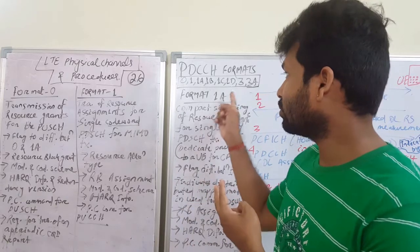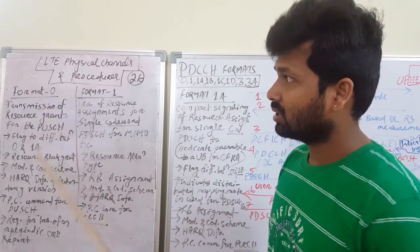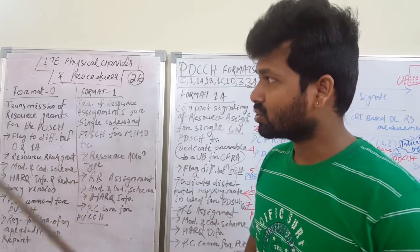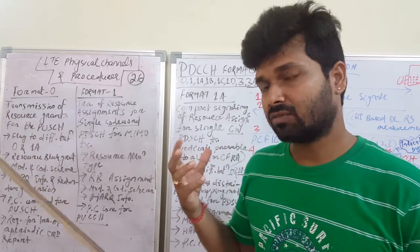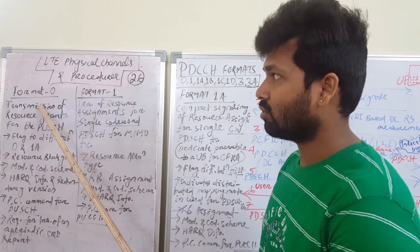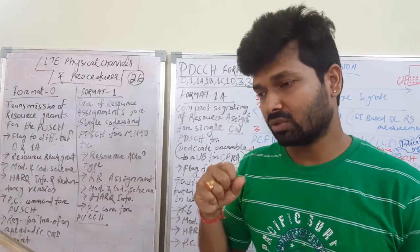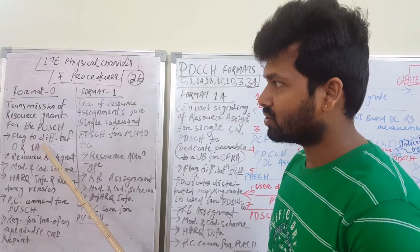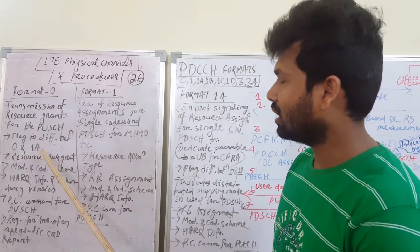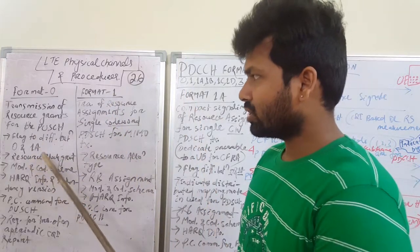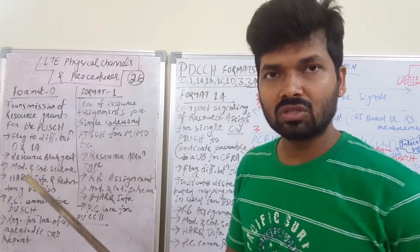Let's start with Format 0. Format 0 is used for transmission of resource grants for the PUSCH. We allow the grant for the PUSCH and that information is shared with this format. We use a flag to differentiate between what kind of resource assignment is used — distributed type or not — and also to differentiate between Format 0 and Format 1A.